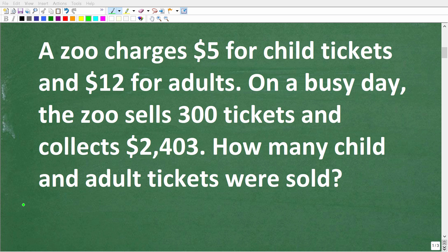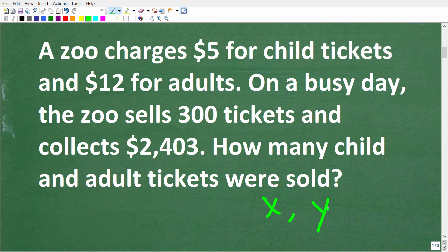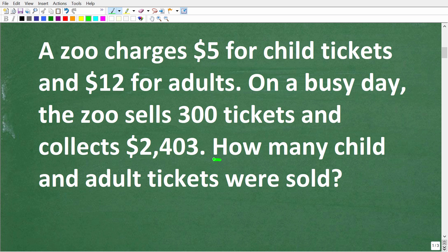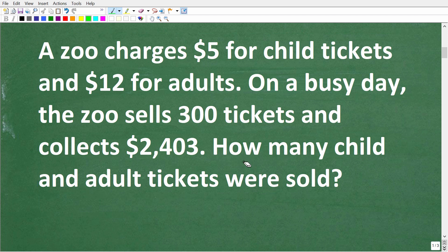The best way to solve this problem is to use algebra, because in algebra we have variables — things like x and y — and remember these just represent numbers. The question asks how many child and adult tickets were sold, so we're looking for two unknown values. We'll let the variable x represent how many child tickets were sold, and y represent how many adult tickets were sold.